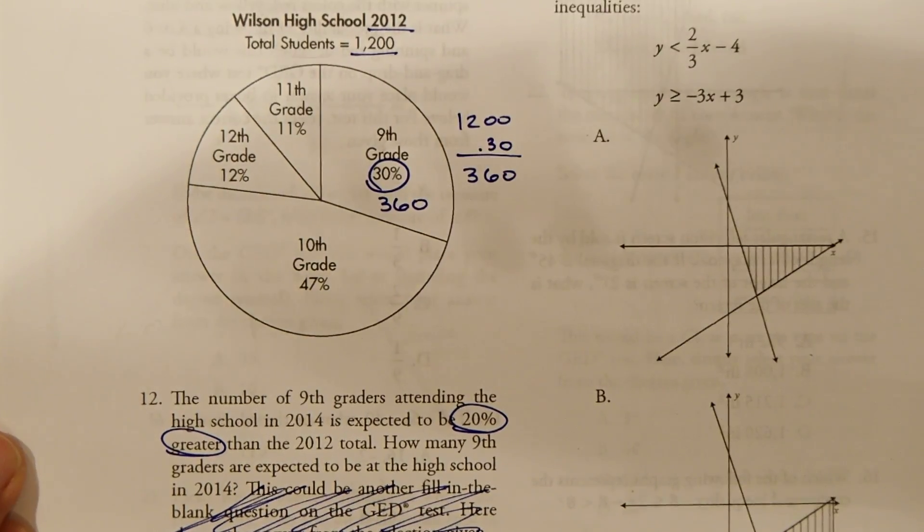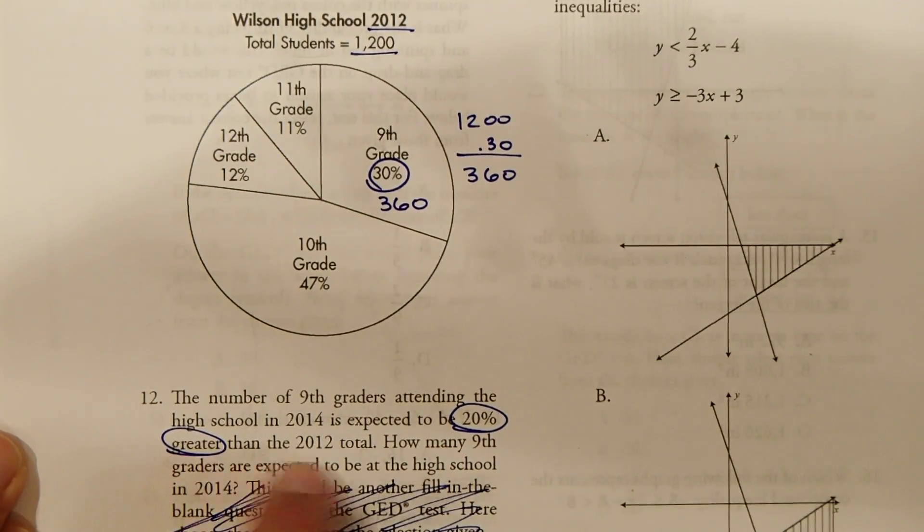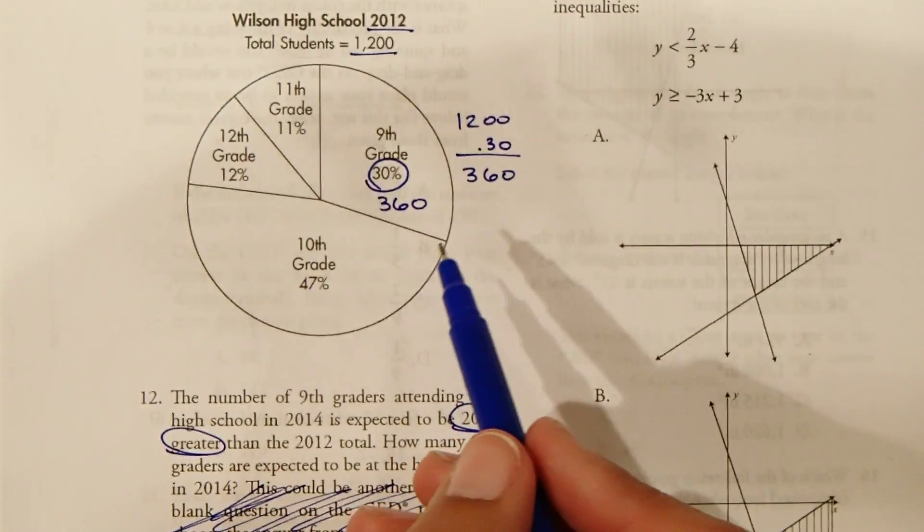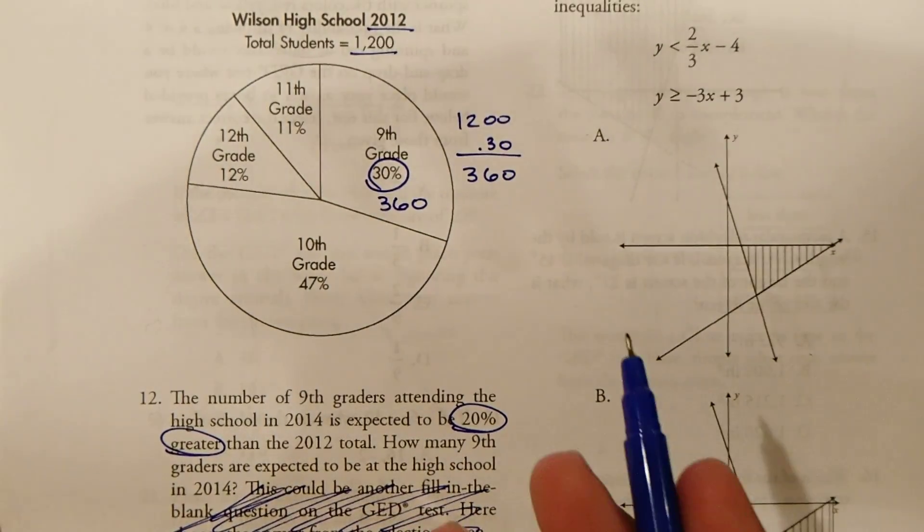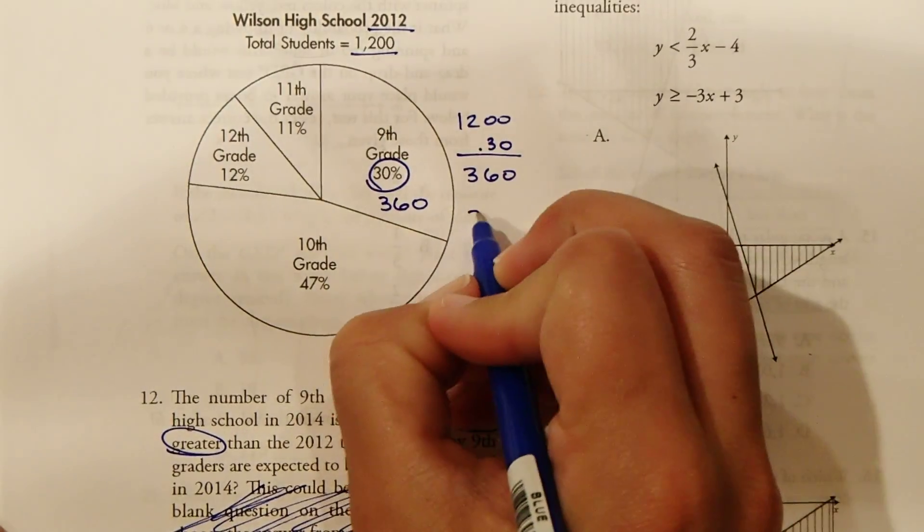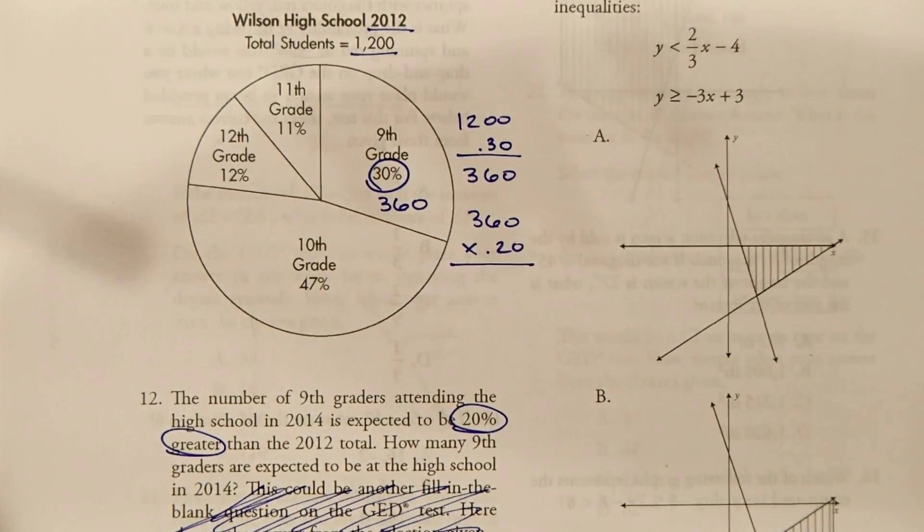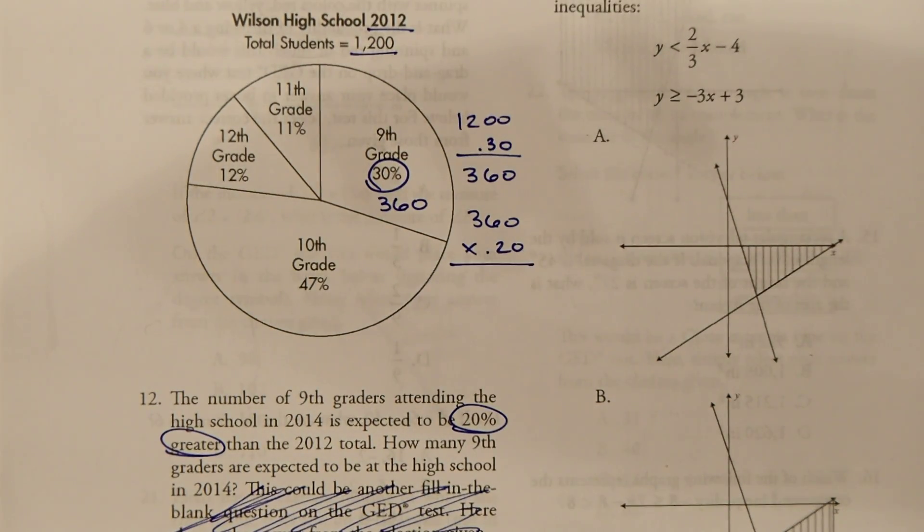Now, if it's going to be 20% greater in 2014, we need to find and add another 20% onto this. So let's find what 20% of 360 is by, again, multiplying times 20% or 0.20. So 360 times 0.20 is 72.